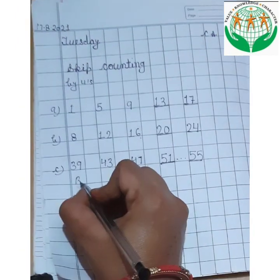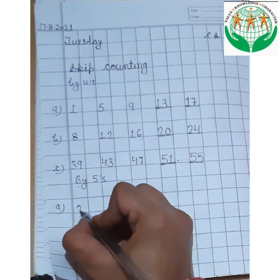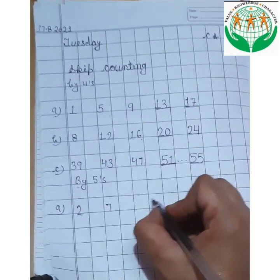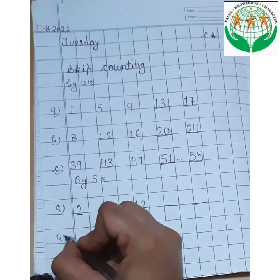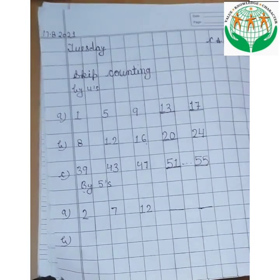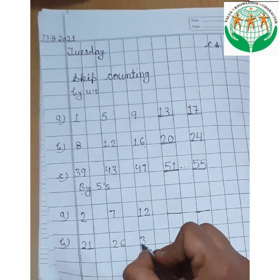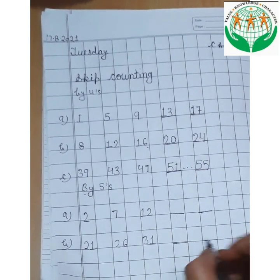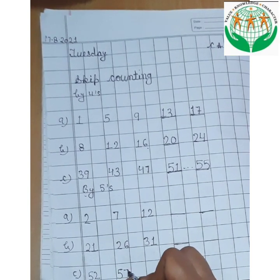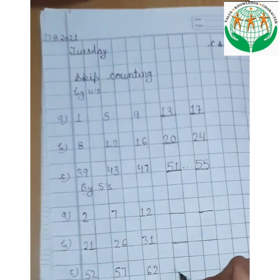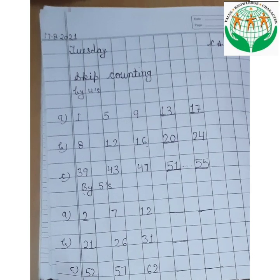Now we will write skip counting by 5's. You will tell what will come here. Part B: 21, 26 — and write here 31. We will put dashes here. Now part C: 52, 57, 62. Now you will tell, according to skip counting by 5's, which number will come here?